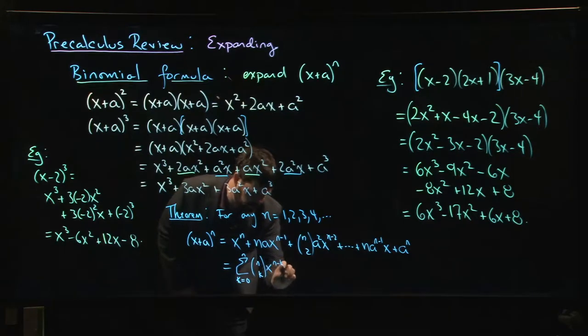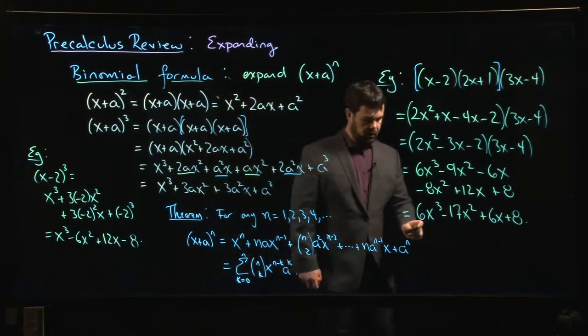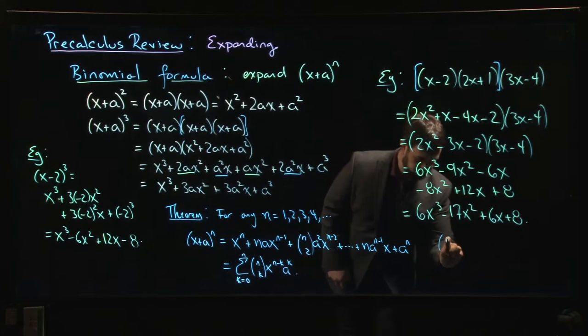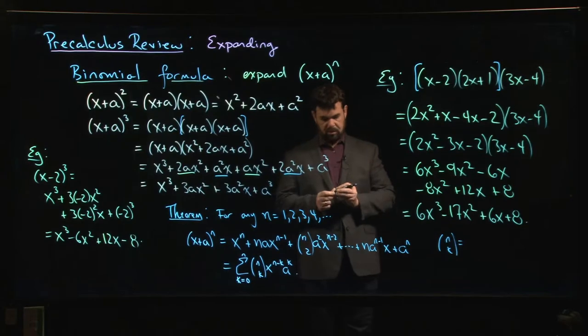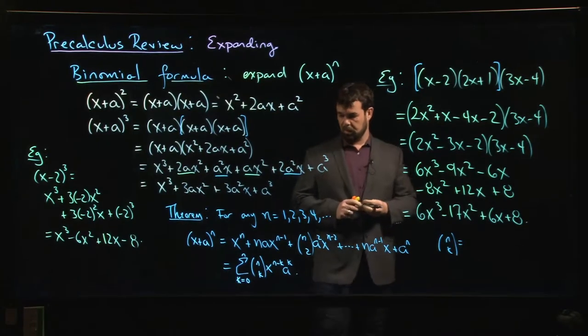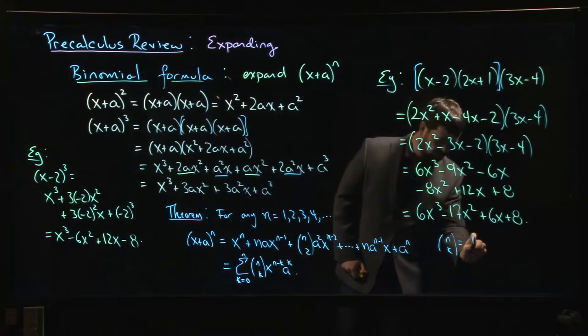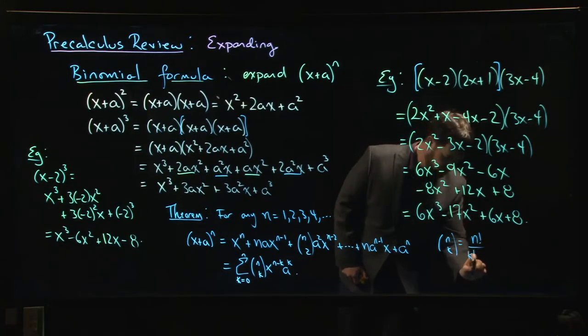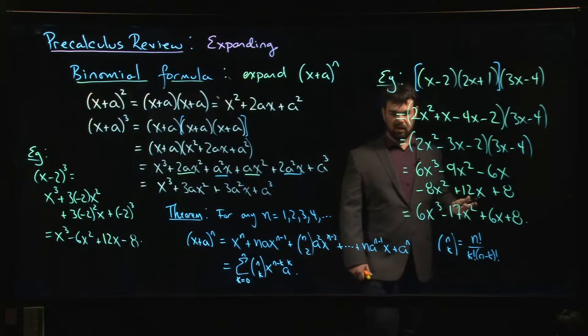These binomial coefficients—you might have seen them in a basic probability or stats course or something in high school. This looks like n factorial over k factorial times (n - k) factorial.